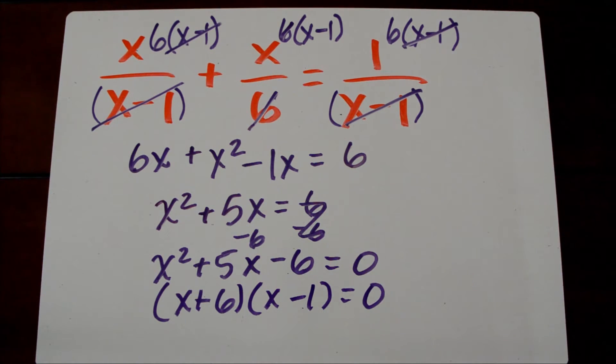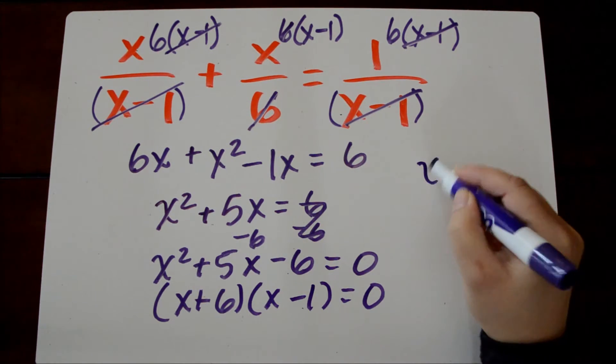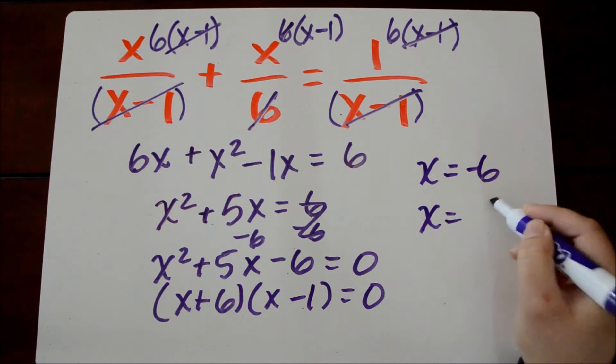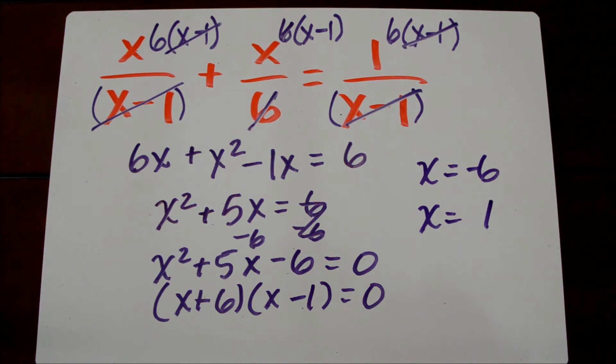When I set those factors equal to 0, my solutions become x equals negative 6 and x equals positive 1.